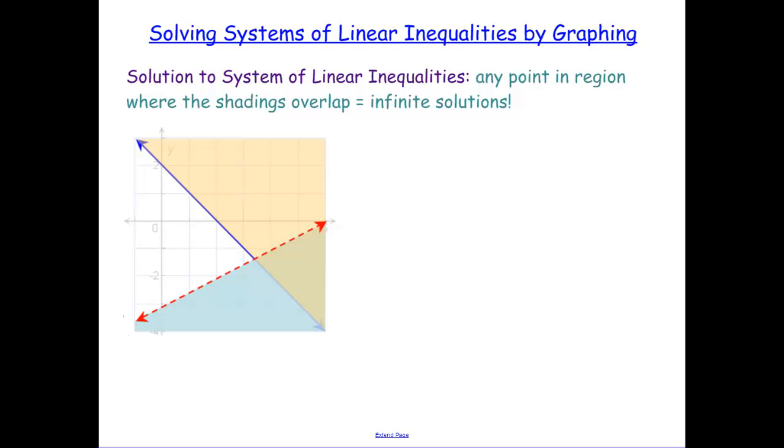Today we're going to be talking about solving systems of linear inequalities by graphing. You graph both of the lines like you normally would, and remember dashed is when you have a less than or greater than sign. Your answer is any point in the region where the shadings overlap. For this blue line we shaded above, for the red line we shaded below. All you need to do is shade the region, and there's an infinite amount of solutions because you're shading all possible solutions.